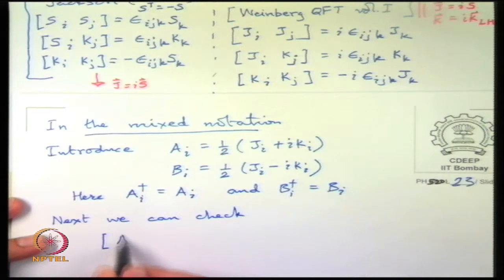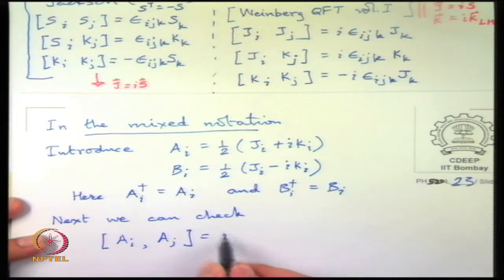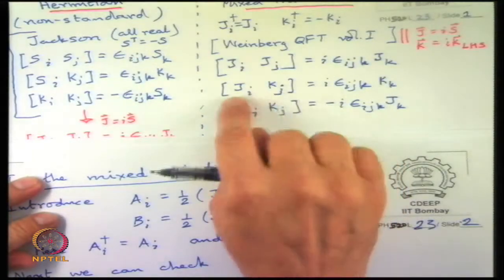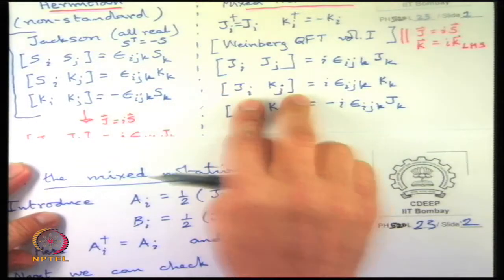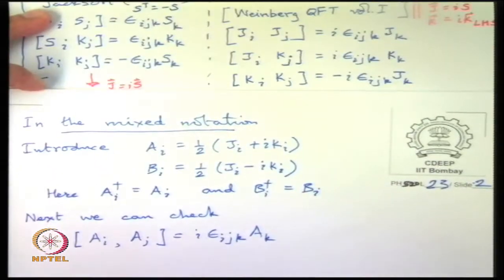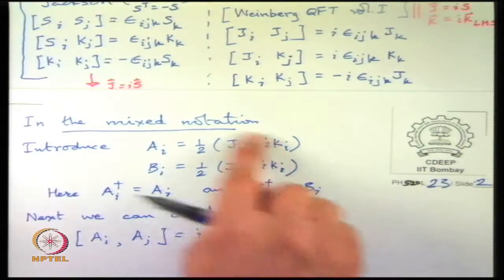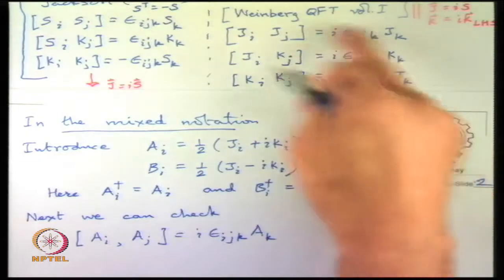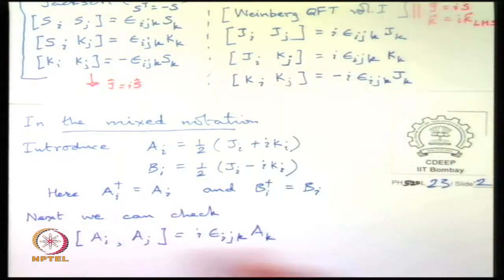Working out the commutators, [A_i, A_j] = i epsilon_{ijk} A_k. We checked this last time except that the only thing was that last time I was writing [K, J] and not [J, K], so there is a sign change, but otherwise it is the same. This works out correctly provided we adopt this convention of defining A to be (J + iK).